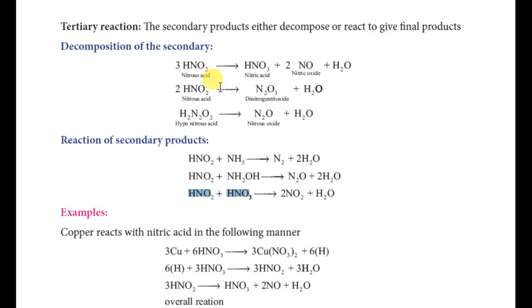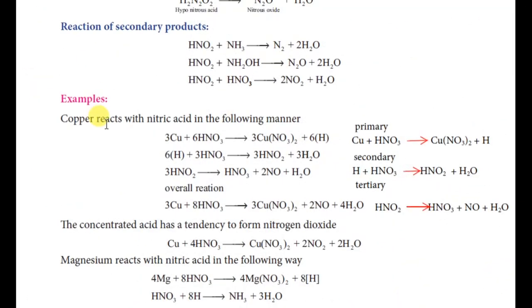So the three reactions are primary, secondary, and tertiary. If you add all the steps and cancel the in-between products, you get the overall balanced equation. For example, copper reacts with dilute nitric acid to give copper nitrate, nitric oxide, and water. With dilute nitric acid, copper produces nitric oxide.